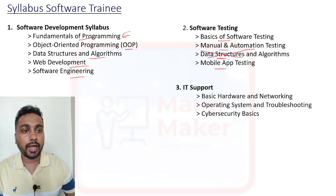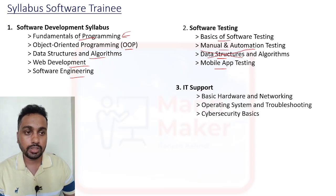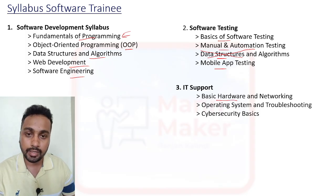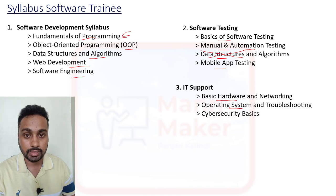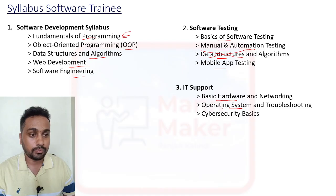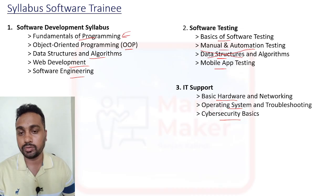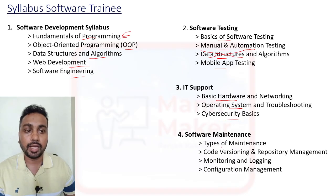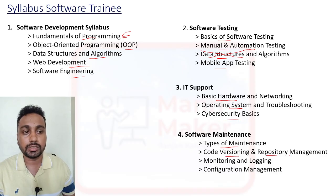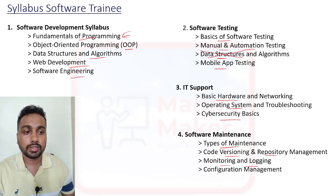For Module 3, IT Support — you are going to get questions on basic hardware and networking parts of a computer system, operating systems, troubleshooting tools, and some basic questions on cyber security. The last module is Software Maintenance, which includes types of maintenance, code versioning and repository management, monitoring and logging, and configuration management.